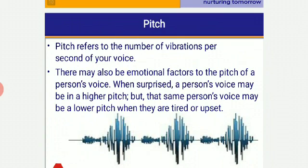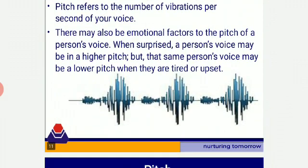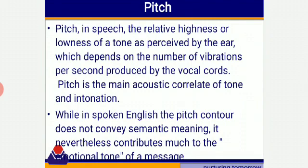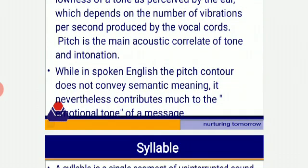Next comes pitch. Pitch refers to the number of vibrations per second of your voice. There may also be emotional factors to the pitch — when surprised, a person's voice may be at a higher pitch, and when angry, the pitch increases. The same person's voice may be at a lower pitch when they are tired or upset. So pitch changes as per our emotions and mood. In speech, the relative highness or lowness of a tone, as perceived by the ear, depends on the number of vibrations per second produced by the vocal cords. Pitch is the main acoustic correlate of tone and intonation. While in spoken English the pitch contour does not convey semantic meaning, it nevertheless contributes much to the emotional tone of the message.